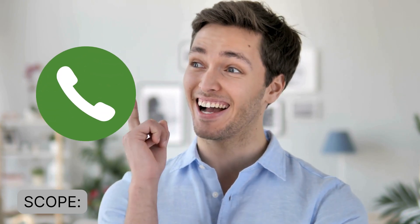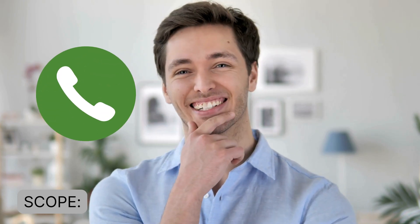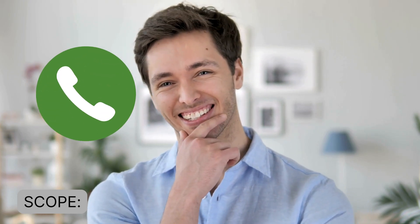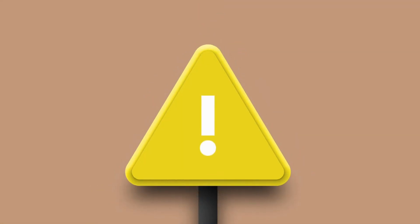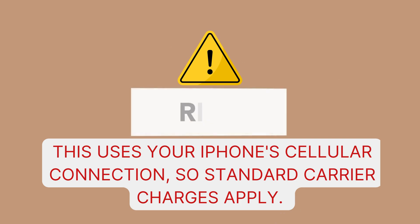What's in scope: making calls, receiving calls, and switching calls between devices. What's out of scope: we won't cover cellular iPad configurations or VPN complications today. Safety note: this uses your iPhone's cellular connection, so standard carrier charges apply.